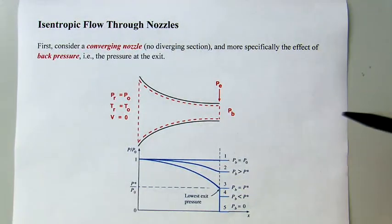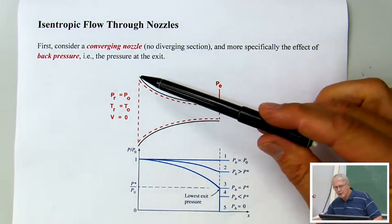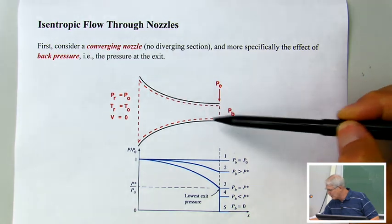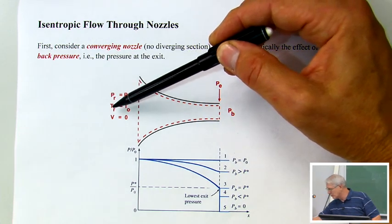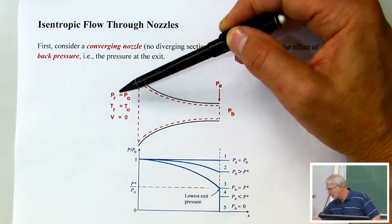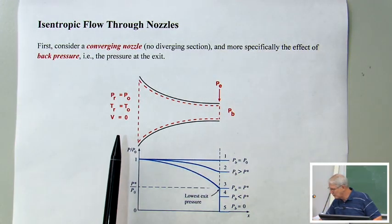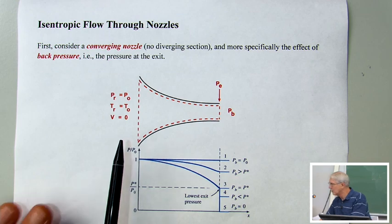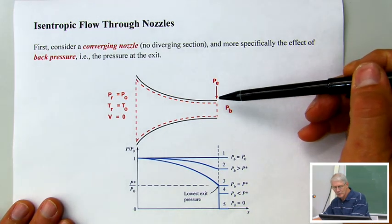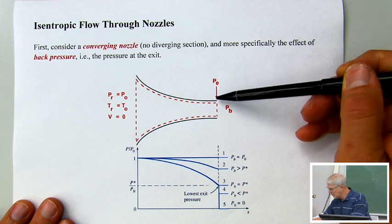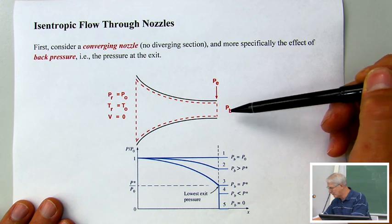If we look at the diagram here, we've drawn our control volume shown by these dotted lines. Far upstream, we have the pressure in the reservoir — the subscript R stands for reservoir pressure, as does the subscript 0. So the pressure in the reservoir is at stagnation pressure, the temperature is stagnation temperature, and the velocity in the reservoir we consider to be 0. At the exit of the flow, we have the exit pressure, and just downstream of that we have the back pressure, which is outside of the control volume.